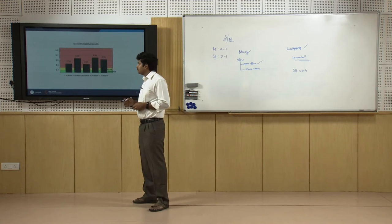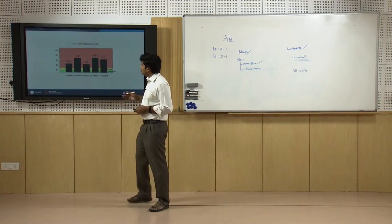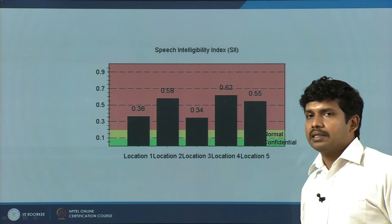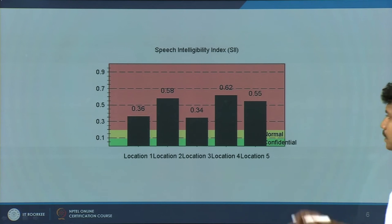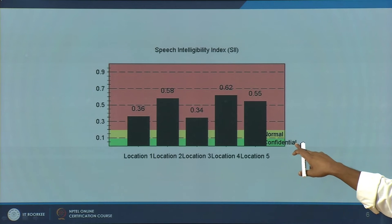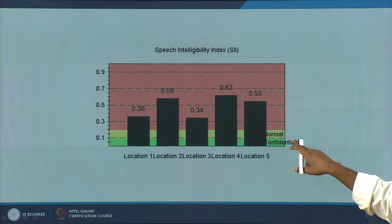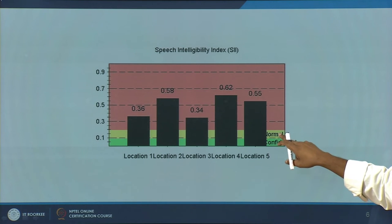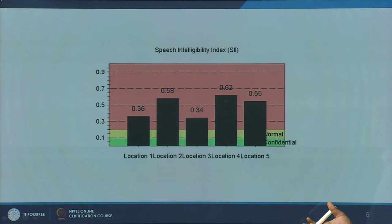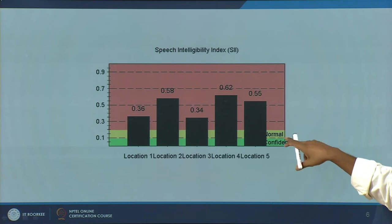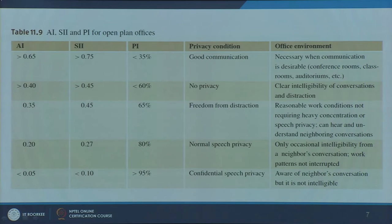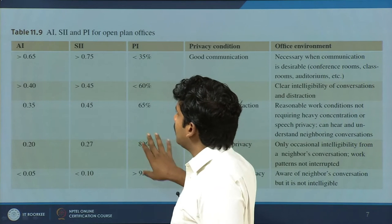In the same office we took measurements at different locations. The speech intelligibility varied between 0.35 and close to 0.6, which means acoustic privacy is lacking except in a few spaces. The green band indicates confidential privacy — articulation index or speech intelligibility index below 0.1. Around 0.2 or lesser is normal privacy. Above that, conversations become intelligible. You can leave the last column for now — this is articulation index (AI).